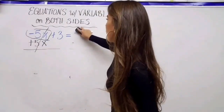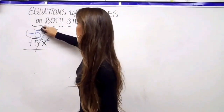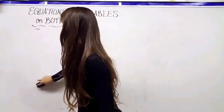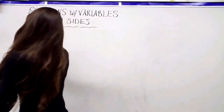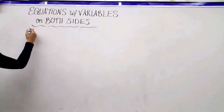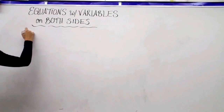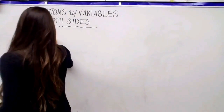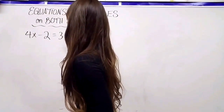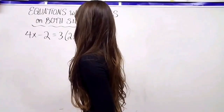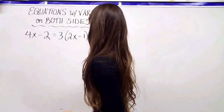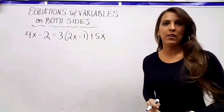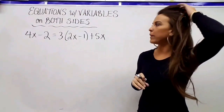Let's add some distributing to make it a little more complex. We're going to work with 4x minus 2 equals 3 times the quantity 2x minus 1, plus 5x. There's a lot going on in this equation.